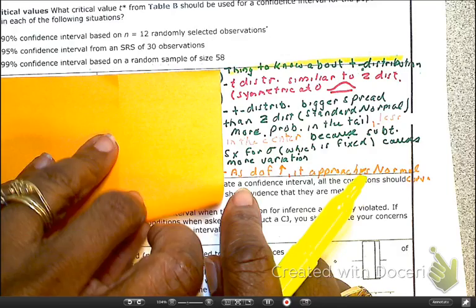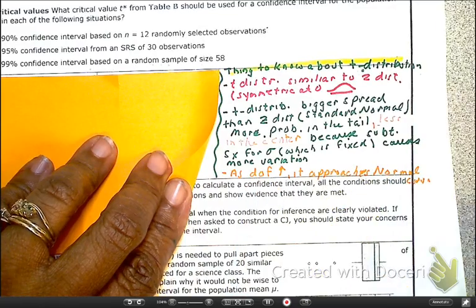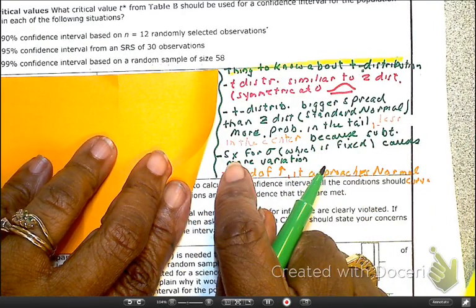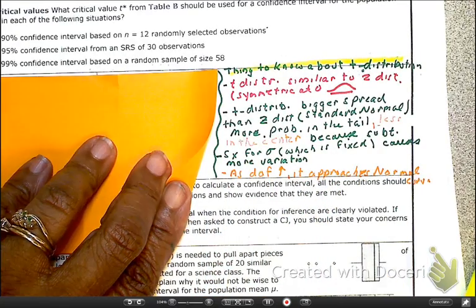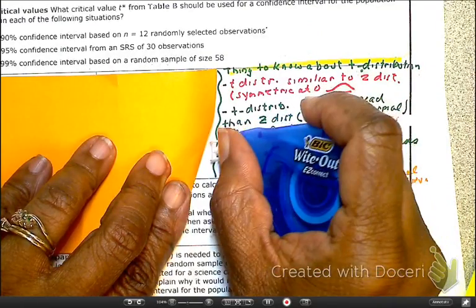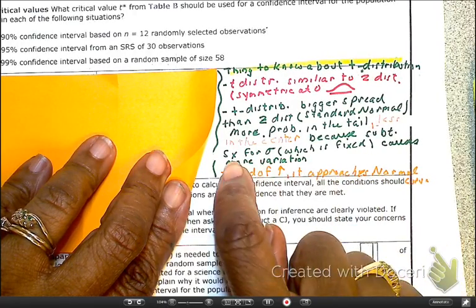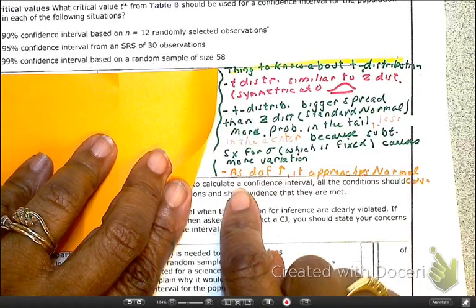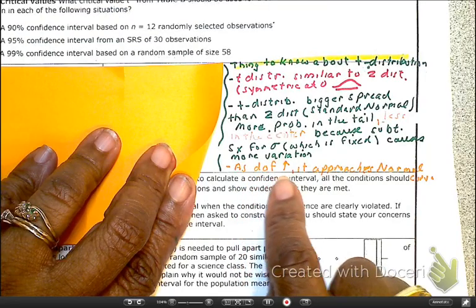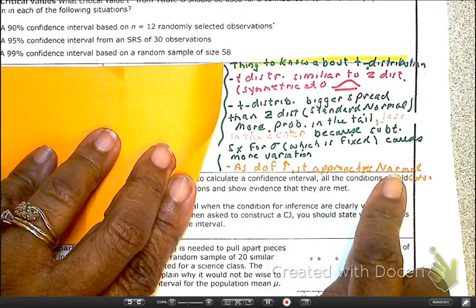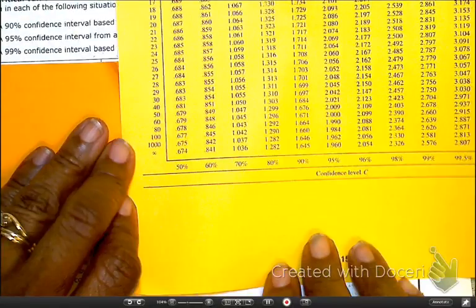Another thing about the T distribution is that for our standard deviation, our standard deviation for the sample, when it is substituted with sigma, remember I told you that it was fixed. So everything I just said, just reiterating, okay. Okay, but now, that's going to change for every sample, so it's going to cause more variation. Okay, one more thing here. As the degree of freedom increases, it's going to approach our normal curve.